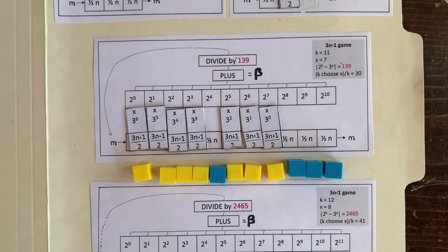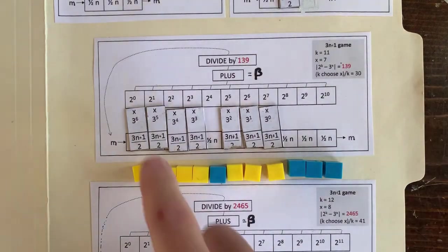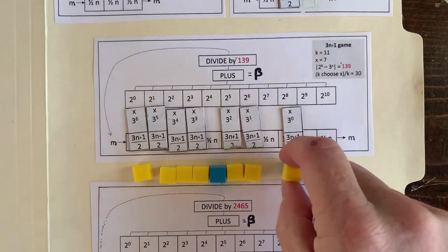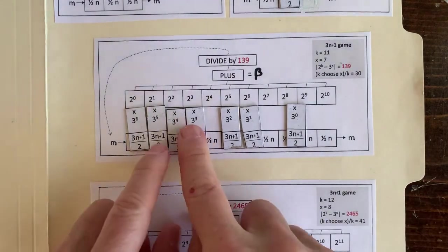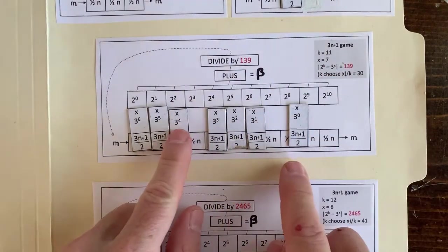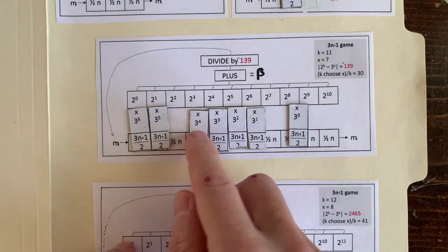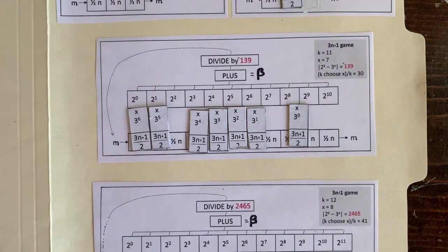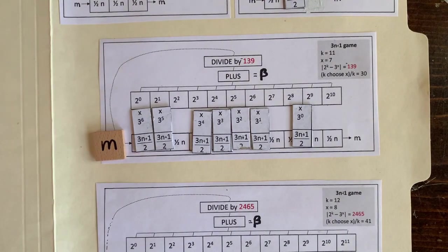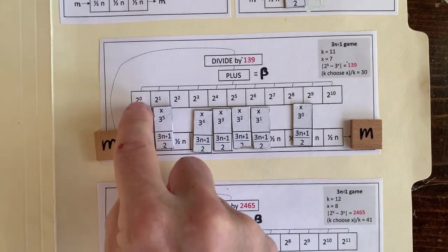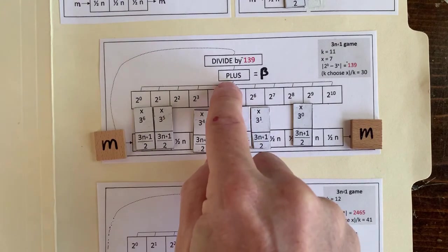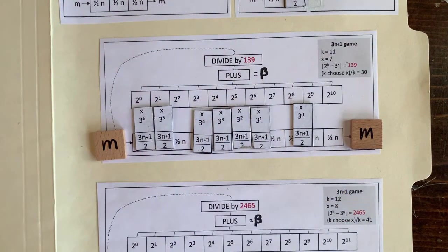Now I can arrange the operation sequence by putting down these little 3n plus 1 over 2 pieces and moving them around. Let's call the number of pieces x, so x equals 7. So now I have an operation sequence. What number m, if I put it on the left-hand side of these operations, will make the same number m pop out on the right side? This computer will tell us. Here's how to calculate that m: we multiply increasing powers of 2 with decreasing powers of 3, sum them, and get out a number we'll call beta.